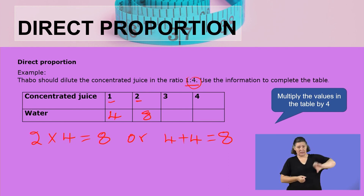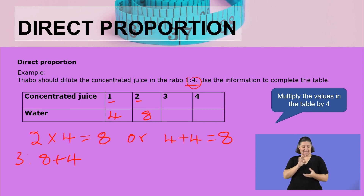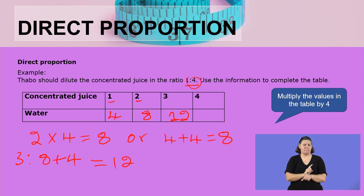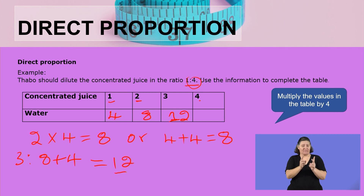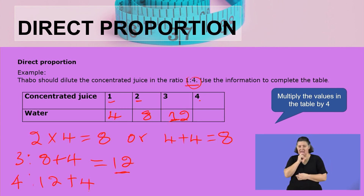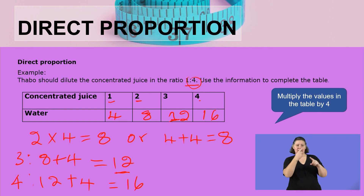For 3 glasses, because we already have 8 for two glasses, we say 8 plus 4, which gives us 12. The method preferred is multiplication, but the easiest is always to add when values are directly proportional. For 4 glasses, we already have 12 for 3, so we say 12 plus 4, which equals 16. Our principle is simple: either multiply the value by 4, or add 4 to every next value.